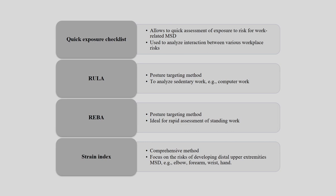The Quick Exposure Checklist (QEC) allows quick assessment of exposure to risk for work-related musculoskeletal disorders and is used to analyze the interaction between various workplace risk factors. From QEC, we try to understand the level of risk and the associated workplace factors causing that risk.